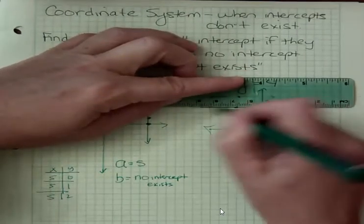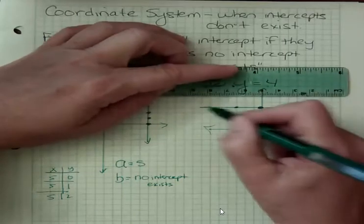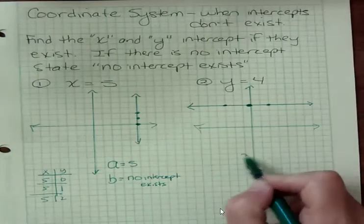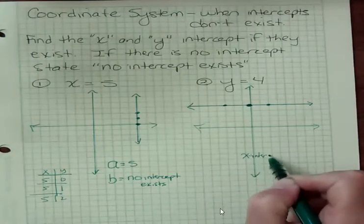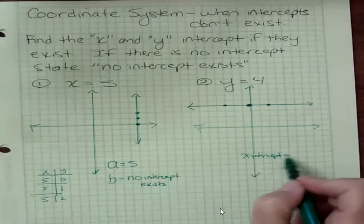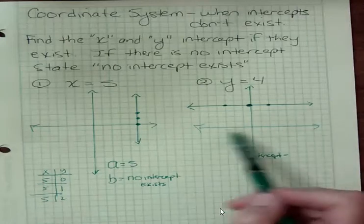So which intercept does not exist for this line? Well, if we think about them in this way, x intercept, which we abbreviate with A if we want. The x intercept, well, that's where it crosses the x axis.